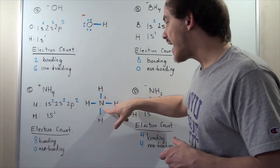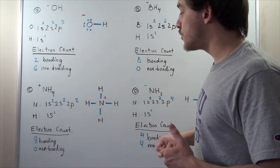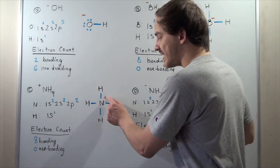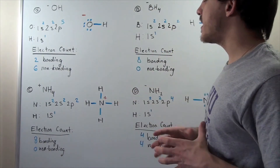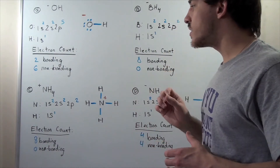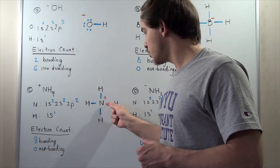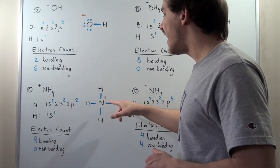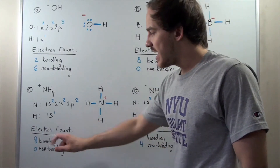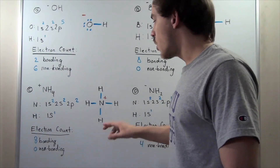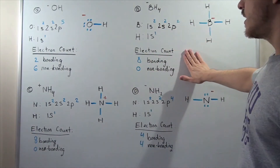We draw N in the middle as the central atom, place four H atoms around it, and connect them — giving four covalent bonds using all eight valence electrons. Notice that N is used to having five electrons, but here it has four, so there is a plus one charge on N. The H's are neutral, giving a net charge of plus one. Electron count: eight bonding electrons, zero non-bonding electrons, just like in the BH₄⁻ structure.